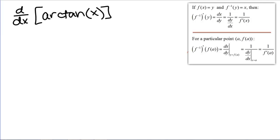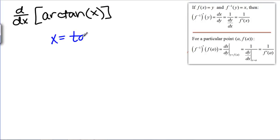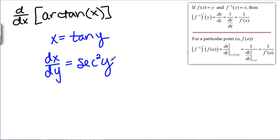We're now going to use the inverse function theorem to figure out what the derivative of arctangent of X ought to be. The inverse function to arctangent of X would be X equals tangent of Y. That's something we already know how to take the derivative of. DX DY then should be secant squared of Y. According to the theorem, if we want DY DX, that should be 1 over DX DY.